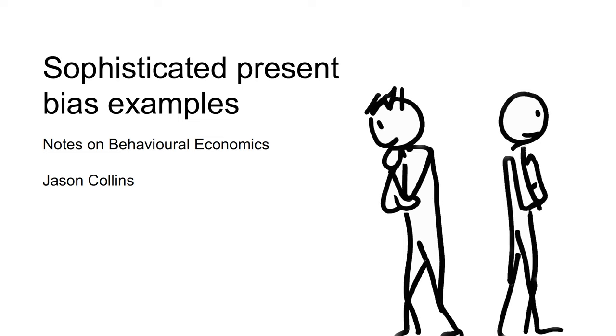Hi, I'm Jason Collins, and in this video I will give some examples of the difference between naive and sophisticated present biased agents.